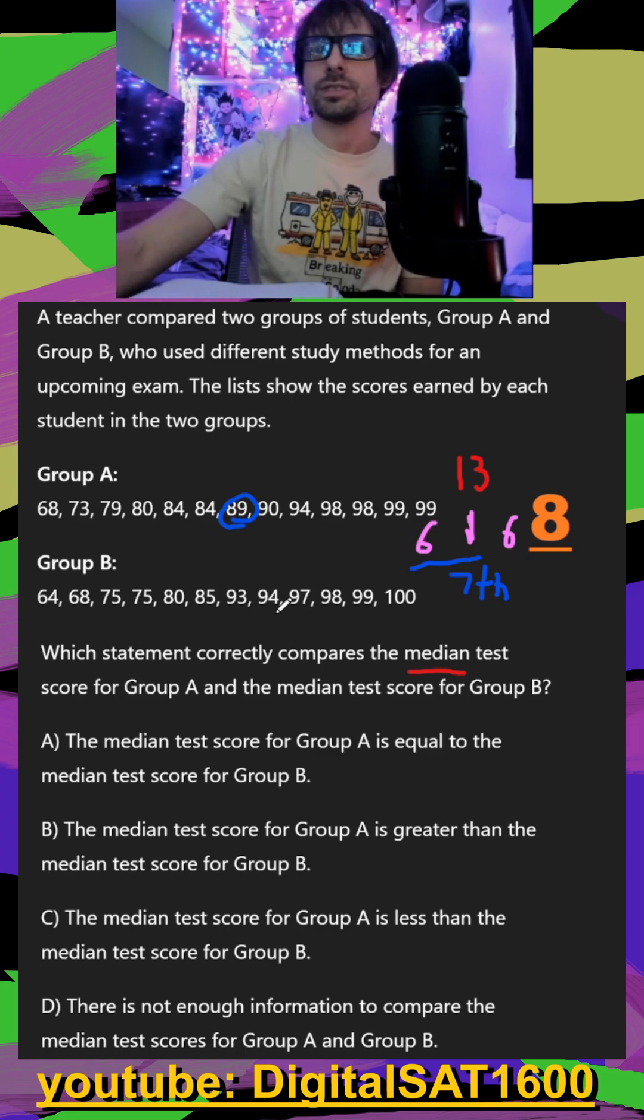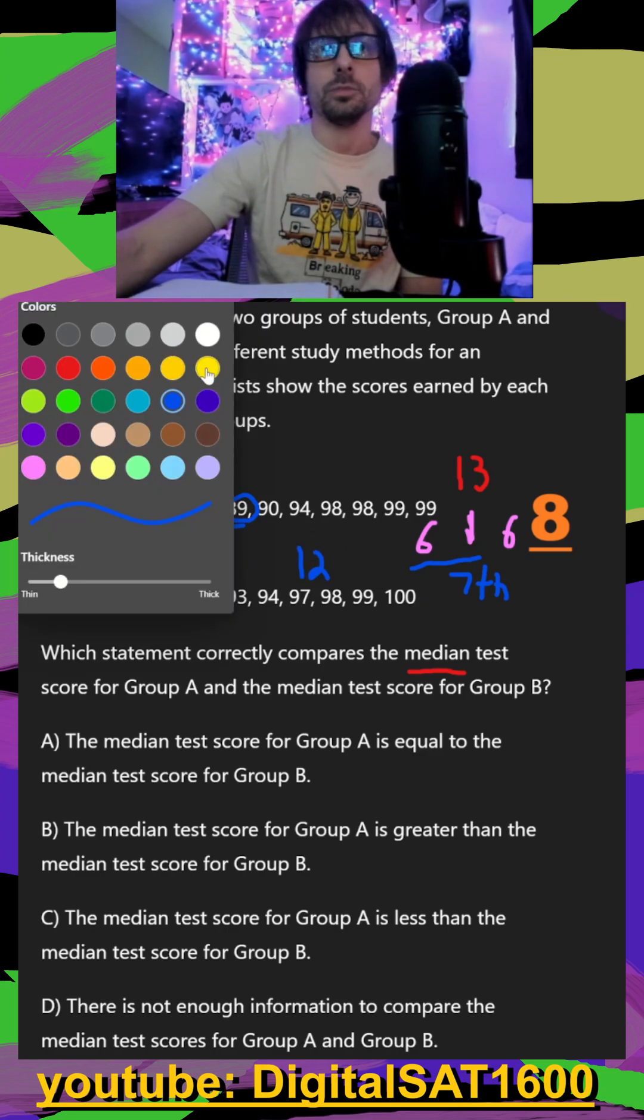It's a little bit more awkward when there's even numbers. Let's just double check. Counting up, there's 12 in group B. Of course, they make it a little bit more difficult.